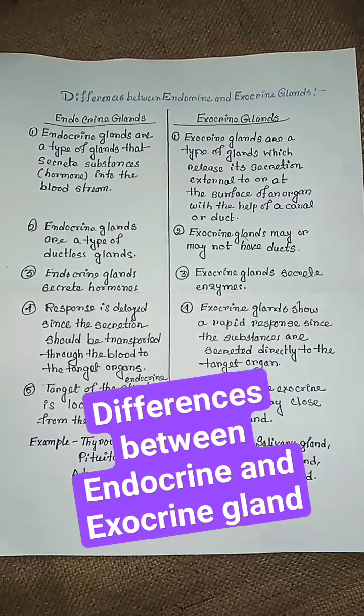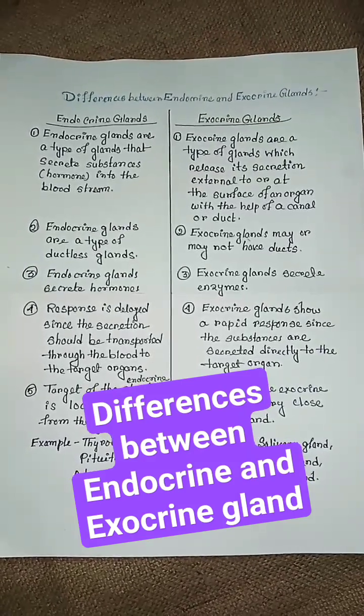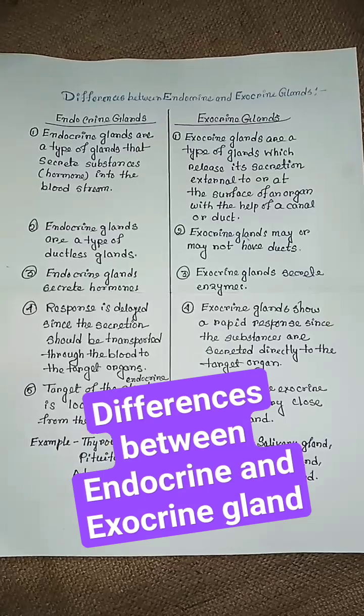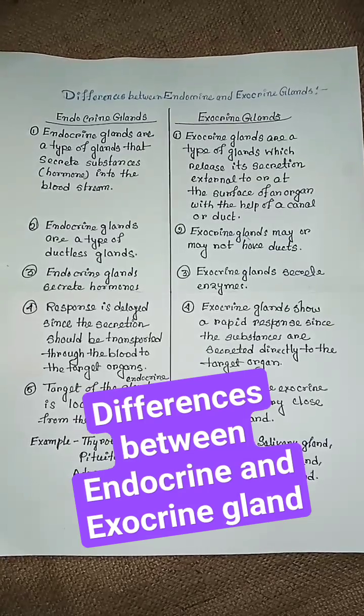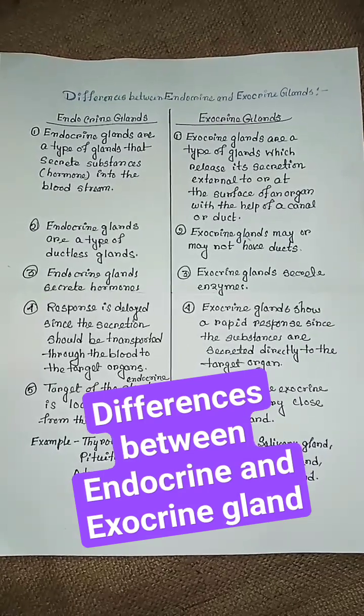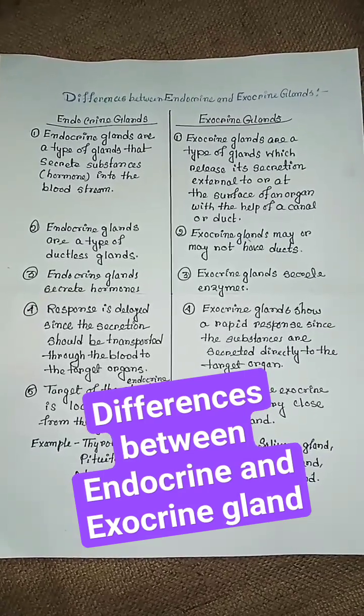Endocrine glands are a type of ductless glands, but exocrine glands may or may not have ducts.